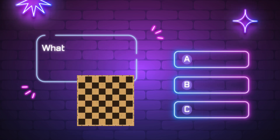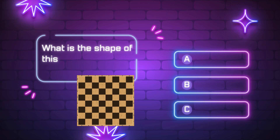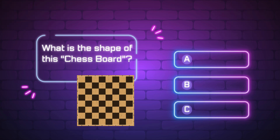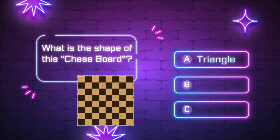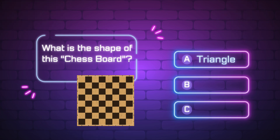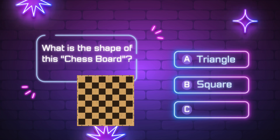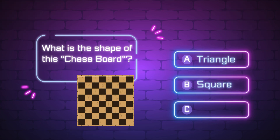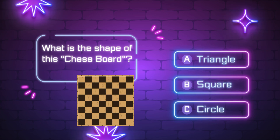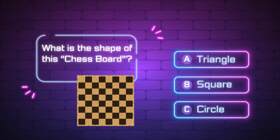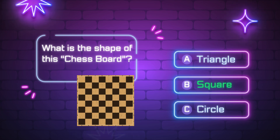What is the shape of this chess board? A, triangle. B, square. C, circle. Yes, it is a square.